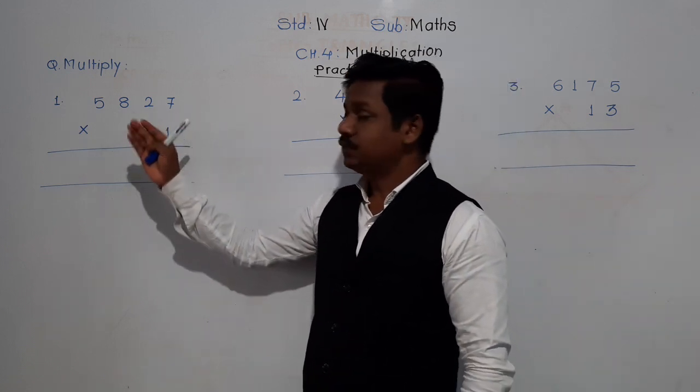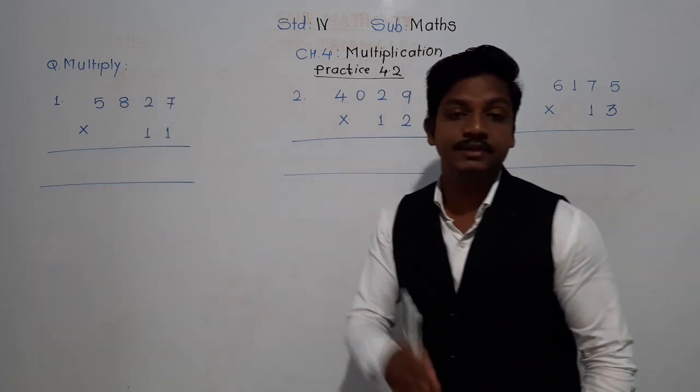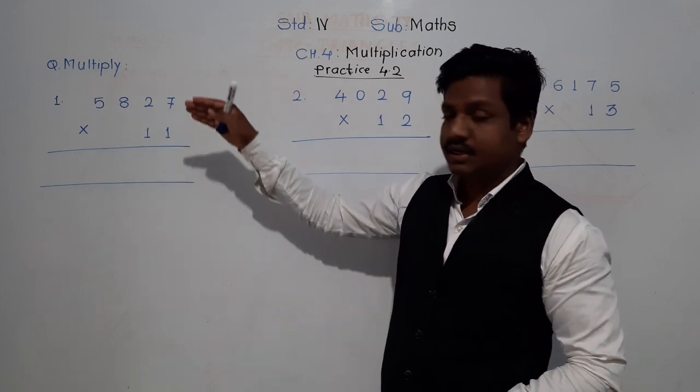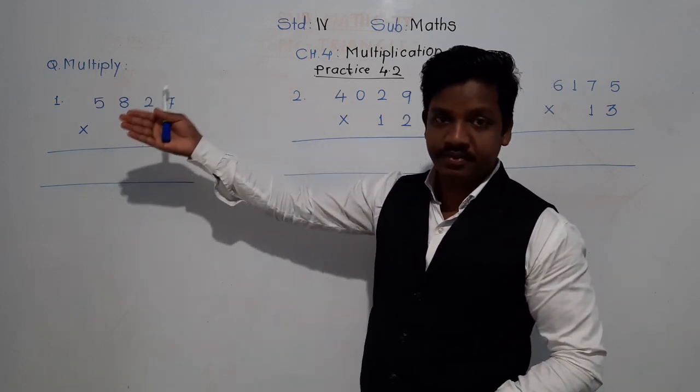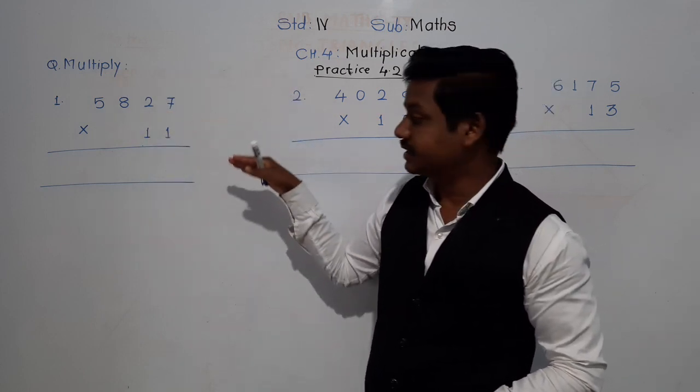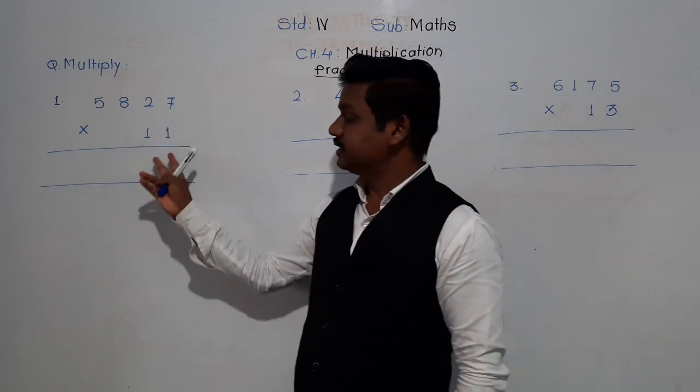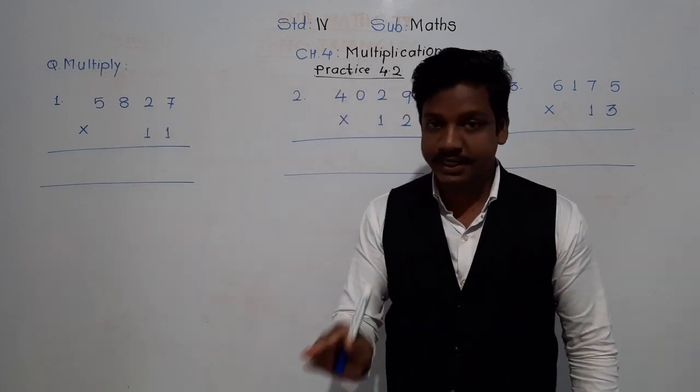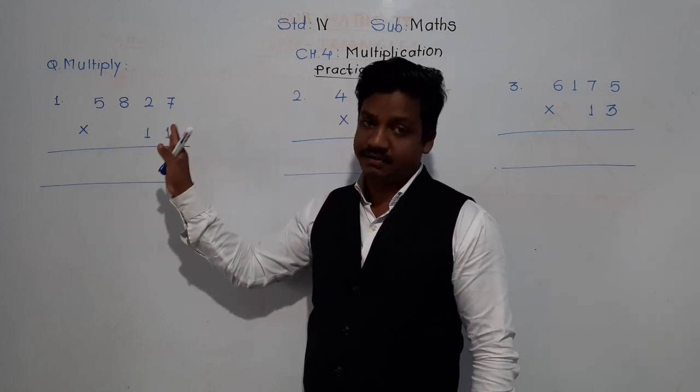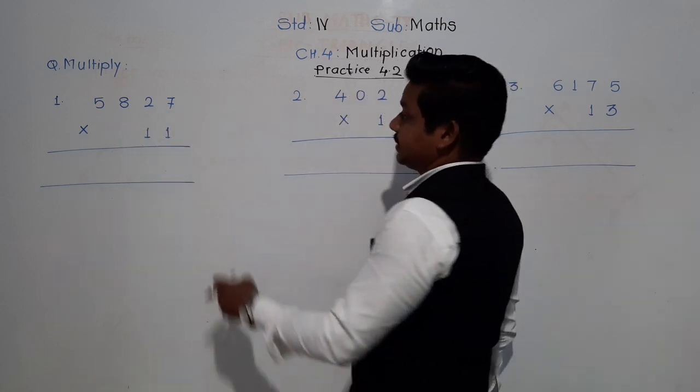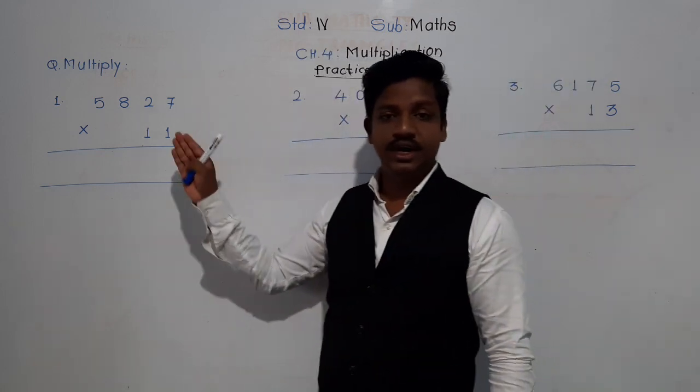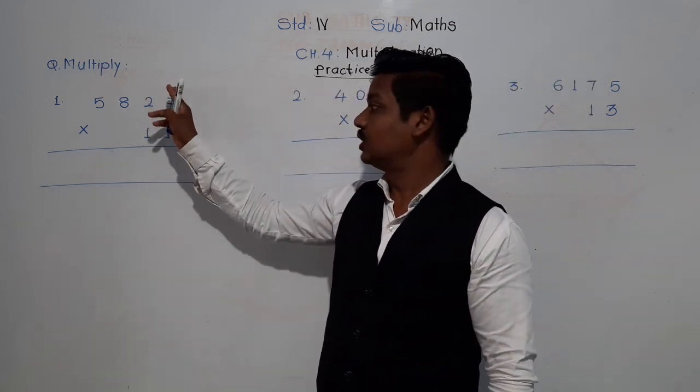In the previous class we have multiplied by 2 digit numbers, we have multiplied directly and by single digit also, in 2 steps or 3 steps. Here see, we know the tables up till 20, so we can multiply directly by 11. So let's multiply, and whenever we are going to multiply, we are going to start with the ones place.